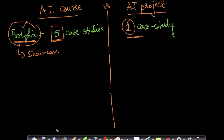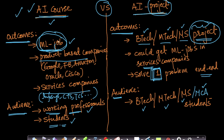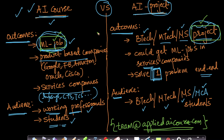To recap: the most important difference is that if you want to land a machine learning job, the AI course is the right choice. If you're looking to do your final year project in BTECH, MTECH, or MS, then the AI project is right for you. If you have questions, email us at team@appliedaicourse.com or call the toll-free number at the top left corner of appliedaicourse.com.